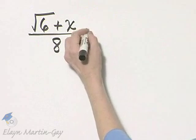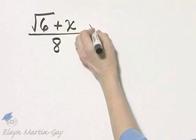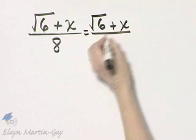And we do this the same way as for rationalizing the denominator. I will rewrite this. It's the square root of 6 plus x all over 8.